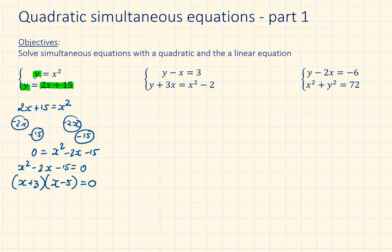To find the first set of solutions, we make each of the brackets equal to 0. So x plus 3 equals 0 gives x equals minus 3. And when x minus 5 equals 0, the solution for x is 5. Now that we have one set of solutions — the x values — we can substitute into one of the equations, equation 1 or equation 2, to work out the corresponding y values.